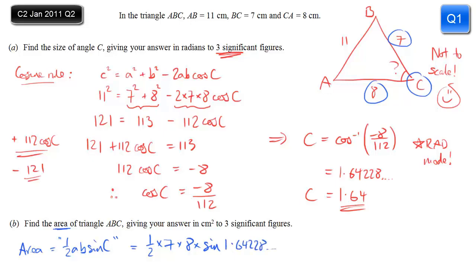The way I would do this is use the ANS key, so you've got the exact value. So type in ½ times 7 times 8 times sine of ANS, and then you get an answer that you know is accurate. In this case, 27.928... Again, we are asked to give the answer to 3 sig figs, so round that to 27.9, and the units are centimetres squared.